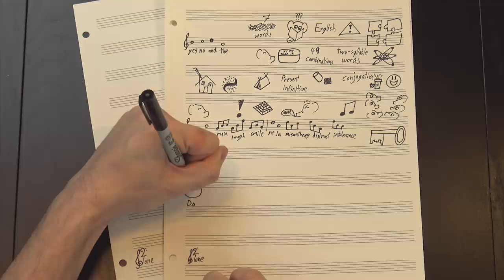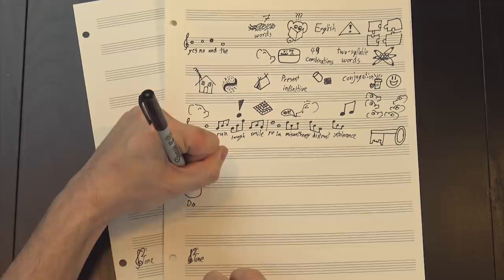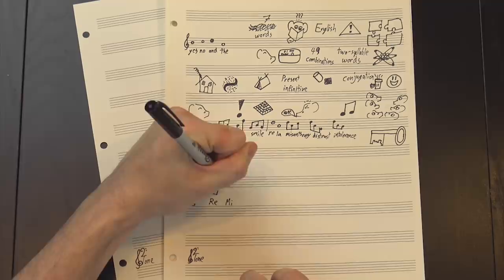The key of Re is for words about the household and family. Mi is for actions and flaws, Fa is for travel and war, Sol is for art and science, La is for industry, and Si is for government.